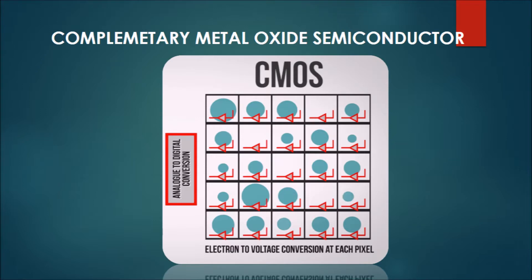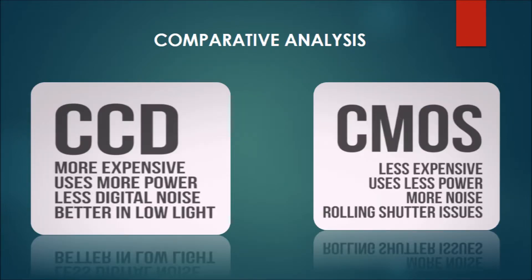The second is CMOS technology — Complementary Metal Oxide Semiconductor technology. The difference between CCD and CMOS is that instead of shuffling signals one by one in an array, CMOS uses extra circuitry for each individual pixel and sends the final signal directly down the line. Power usage drops and processing speed increases, but the noise factor increases too. On comparative analysis, CCDs are more expensive and use more power, but create less digital noise and work better in low light, whereas CMOS has some rolling shutter issues.